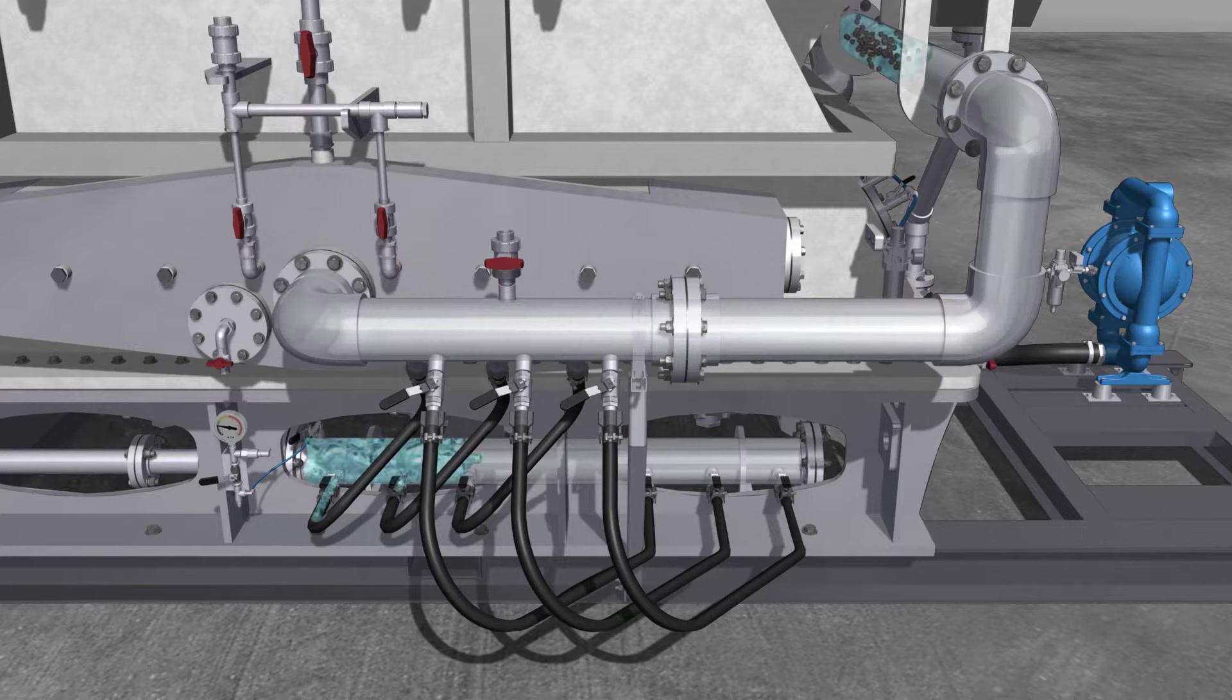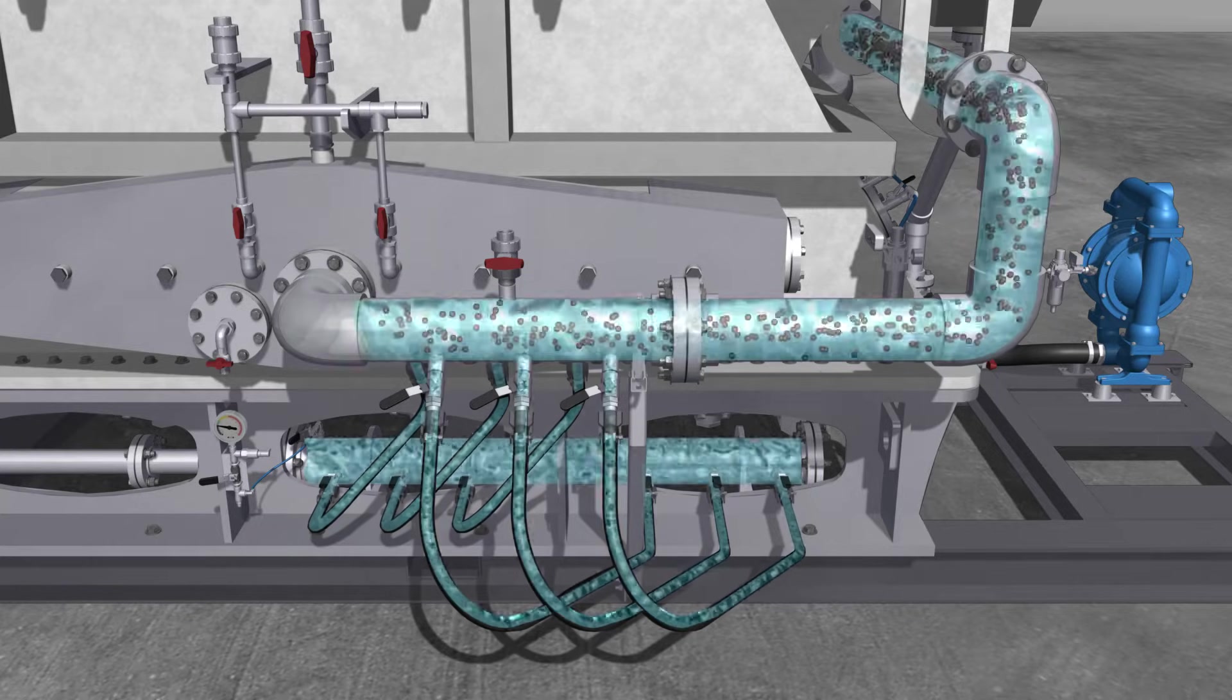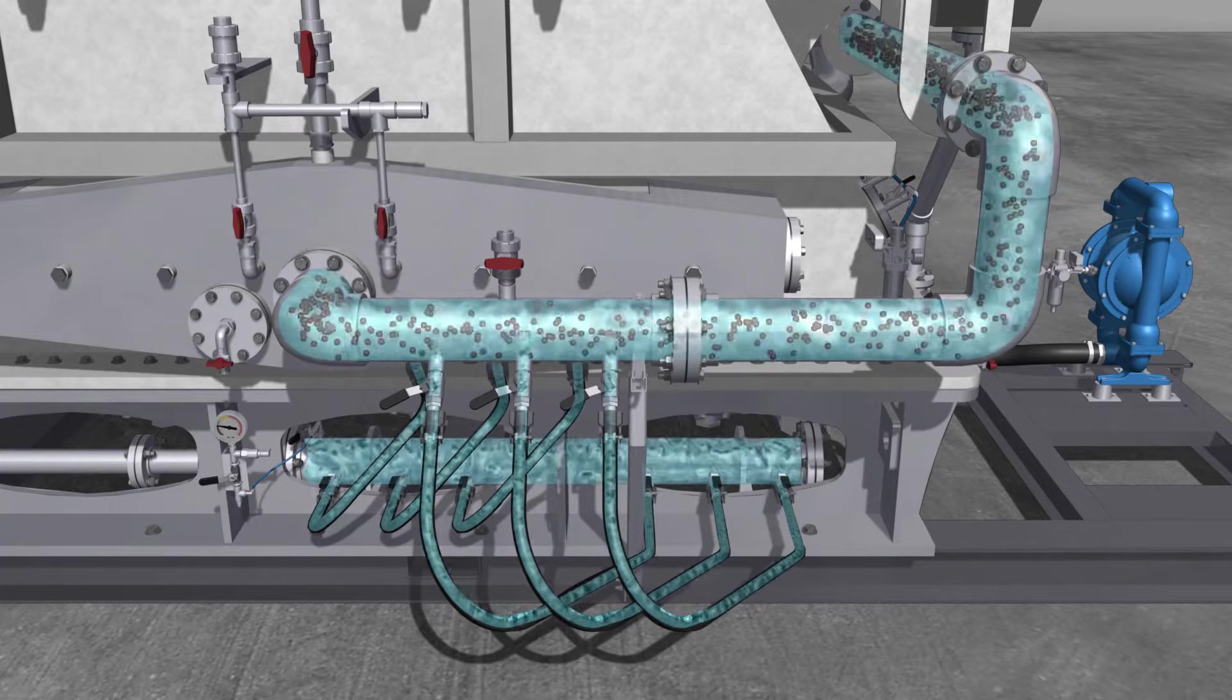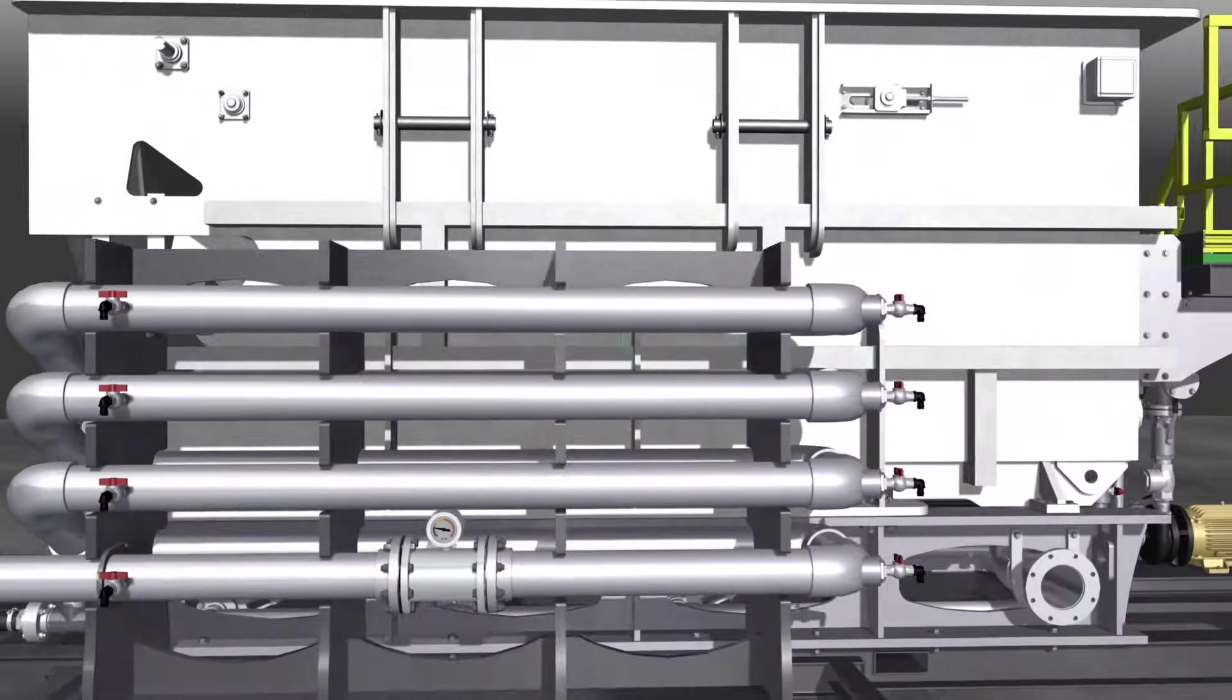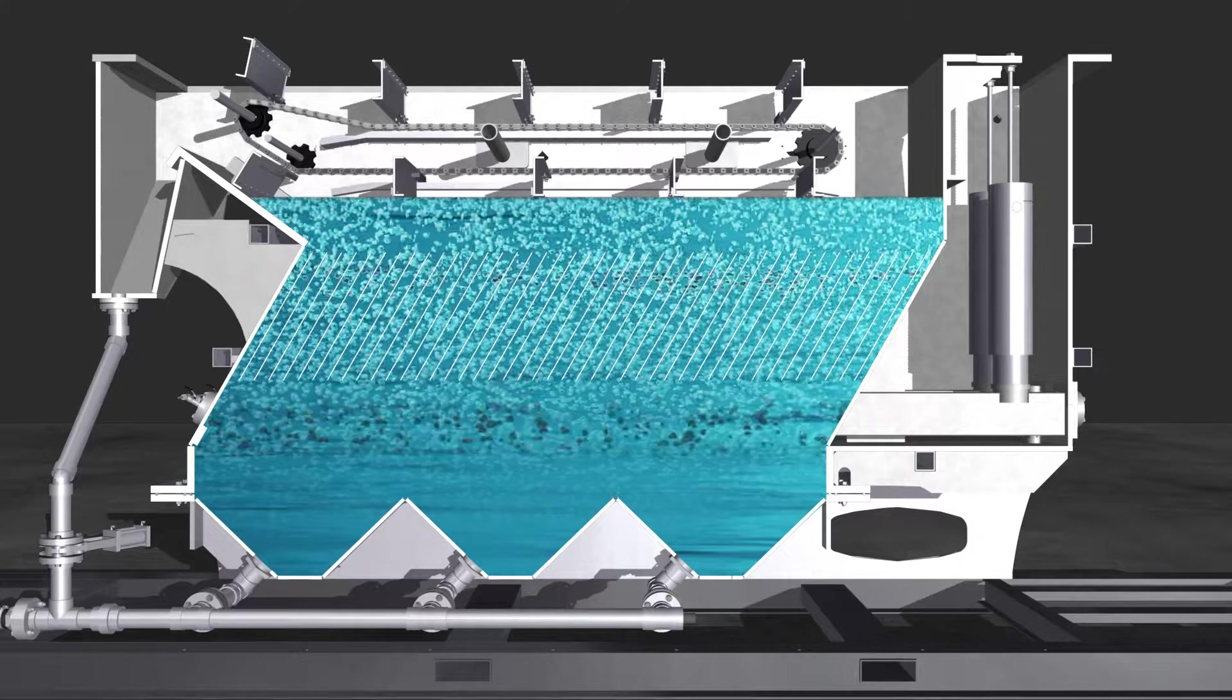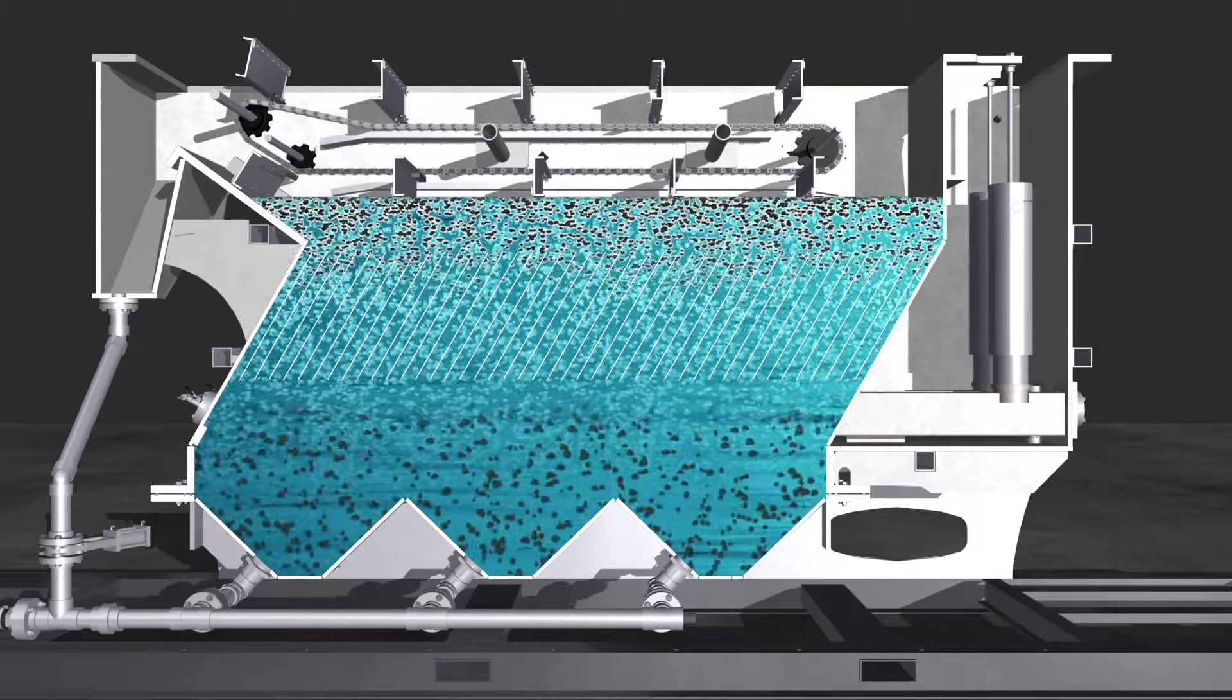The aerated water will then combine with the wastewater stream and enter into the DAF header box, where it will spread along the length of the DAF and begin the separation process. As the air releases from the DAG recycle, micro-bubbles will attach to the particles causing them to rise to the surface.